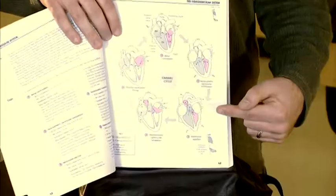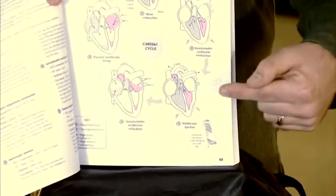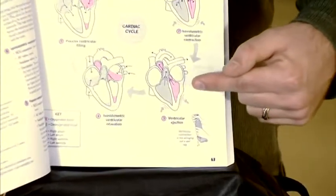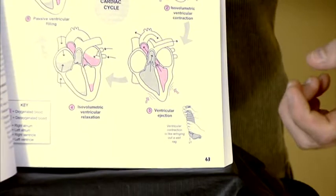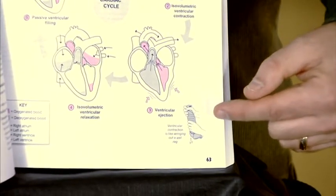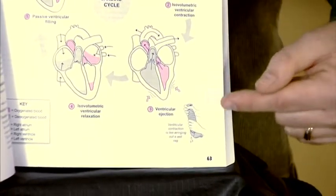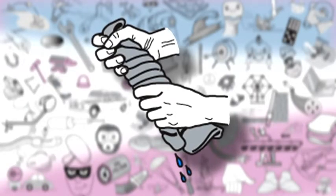Also in the physiology book is an analogy to describe the pumping that occurs with the two ventricles inside the heart. Those two pumping chambers, during their muscular action, are actually similar to the wringing out of a rag.